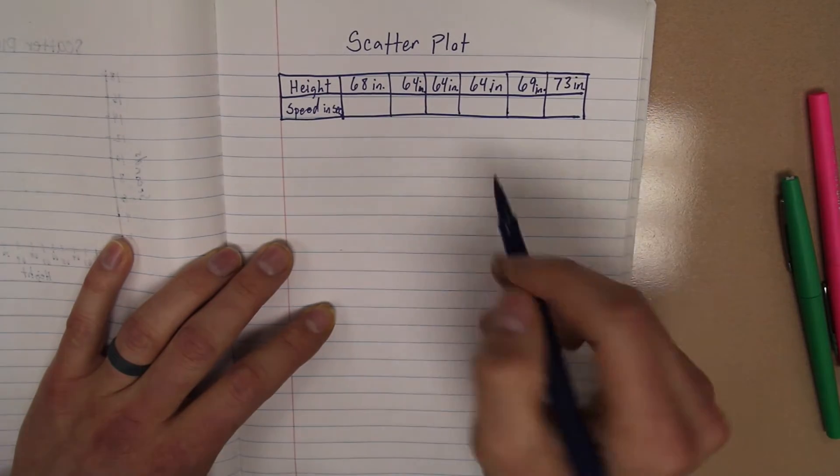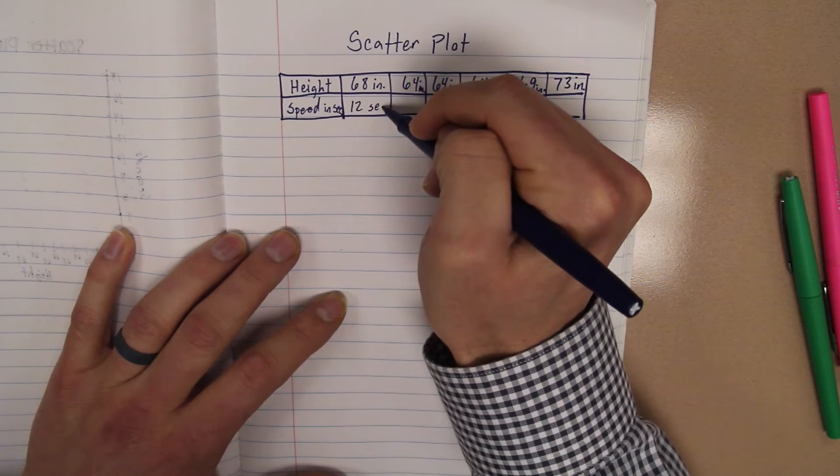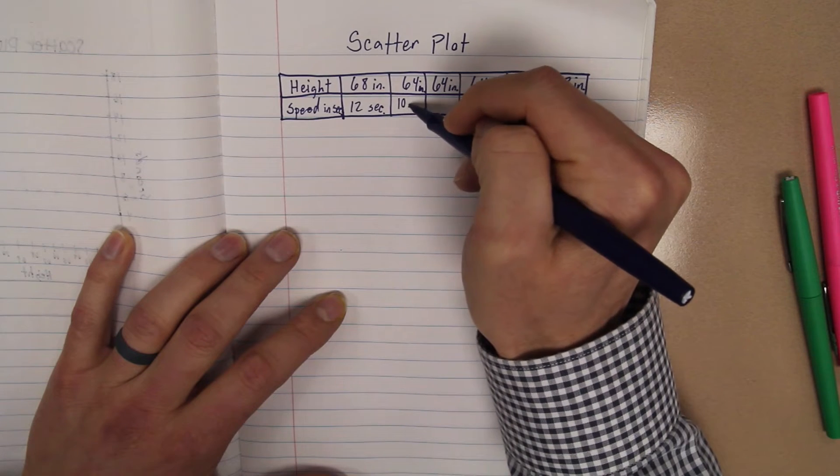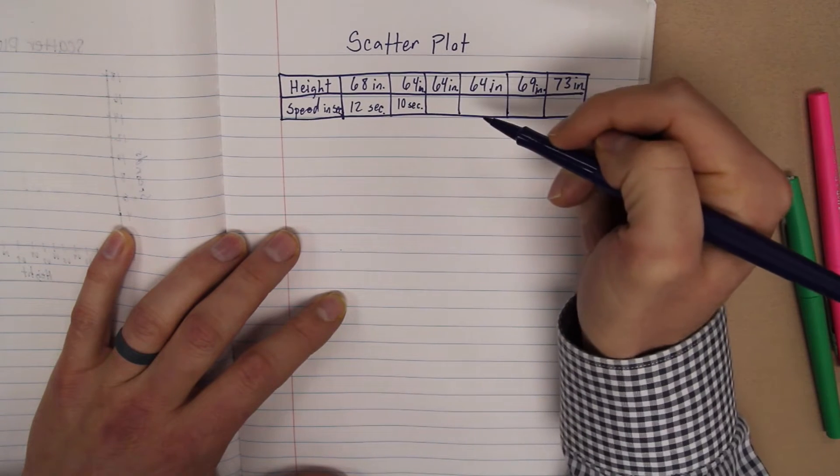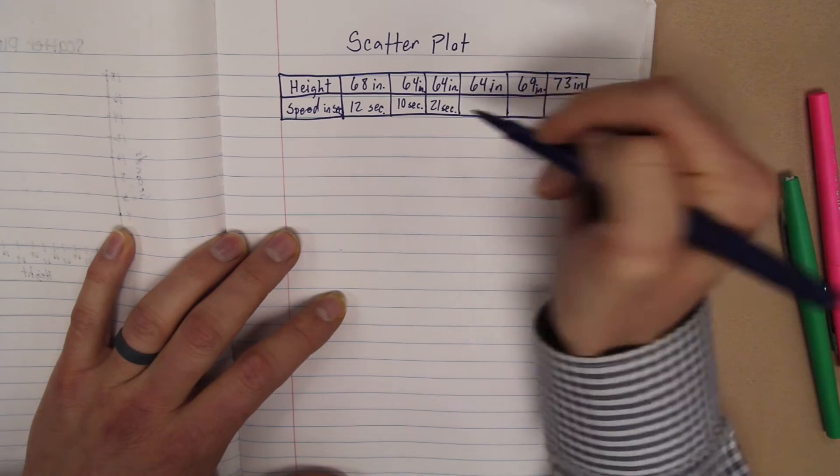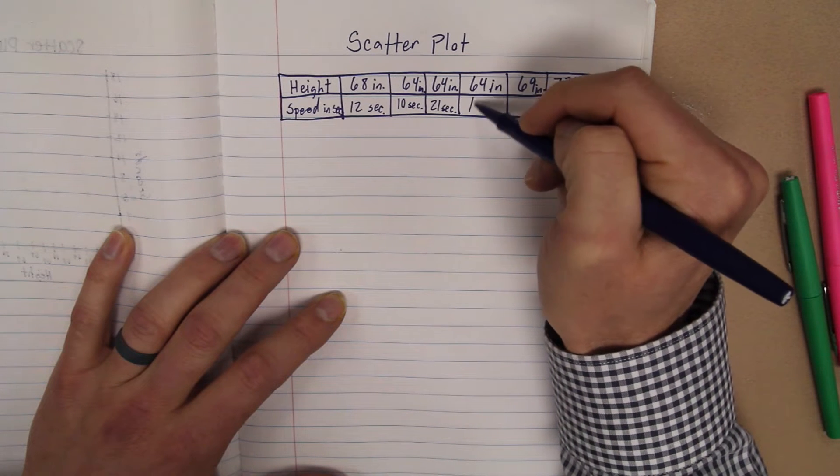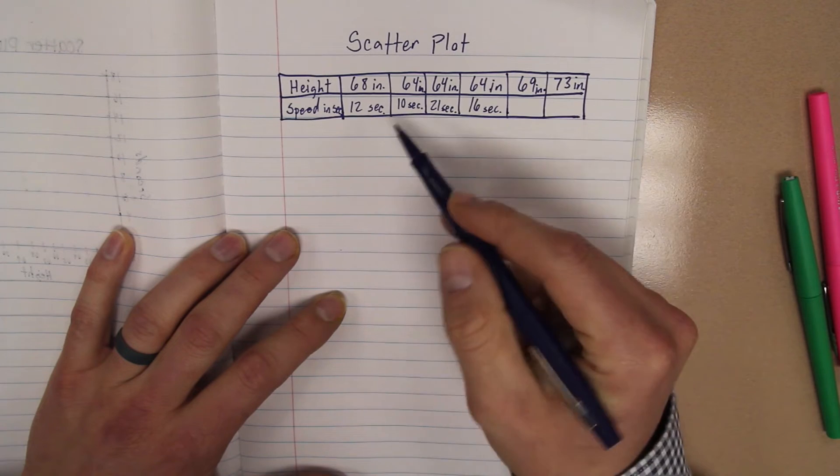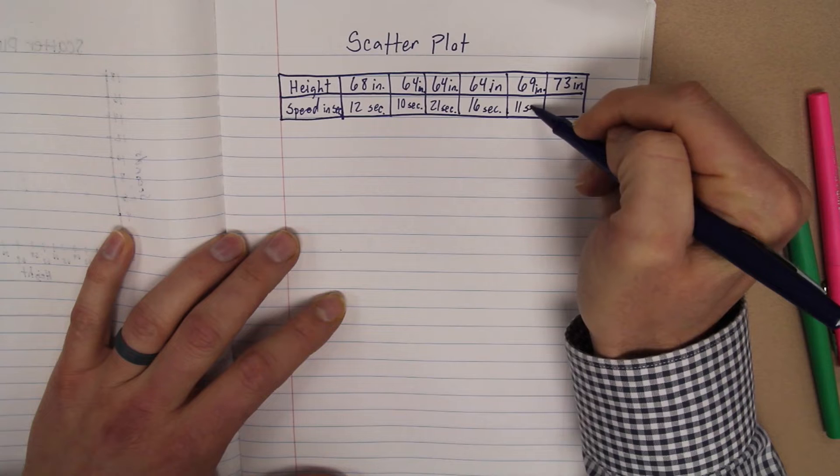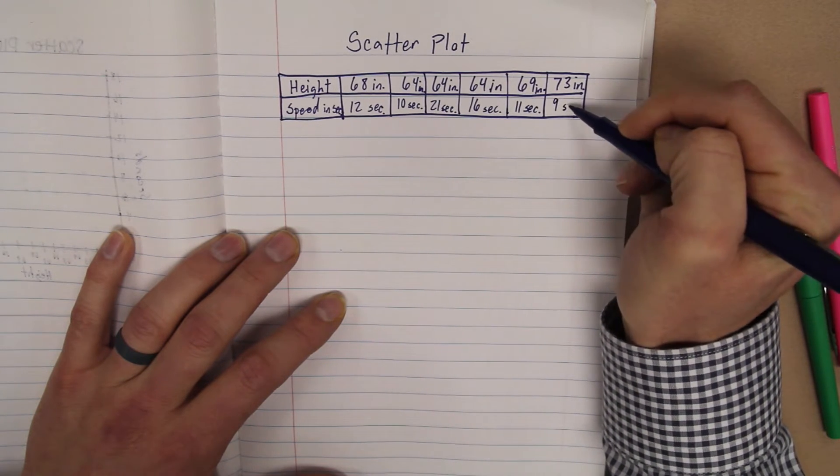So does that correlate with how fast they did? So the person that was 68 finished in 12 seconds. The person that was 64 inches, the first one, finished in 10 seconds. Another person that was 64 finished in 21 seconds. Another one that was 64, was 16 seconds. A lot of people are the same height here. One that was 69 inches finished in 11 seconds. And the one that was 73, finished in 9 seconds.